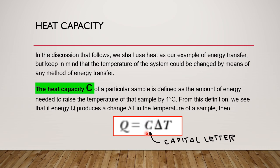From the definition, we shall see that if energy Q produces a change delta T in the temperature of a sample, then Q equals capital letter C multiplied by delta T. Remember, this is capital letter C. Don't be confused because later we will discuss small letter c, which is different. This capital letter C is heat capacity. If you want to find it, it's Q over delta T.